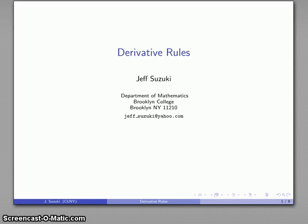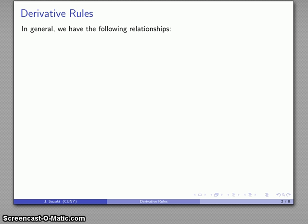While we can go back to the definition of the derivative every time we want to find a derivative, it's more convenient if we have some rules that make it easier to find other derivatives once we've found a couple. These fall under the category of derivative rules, and we're going to introduce a couple of the basic ones.